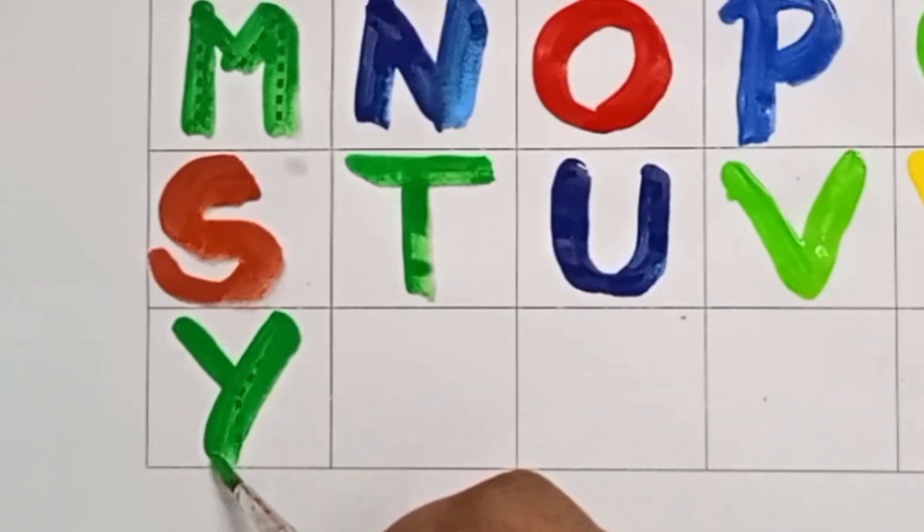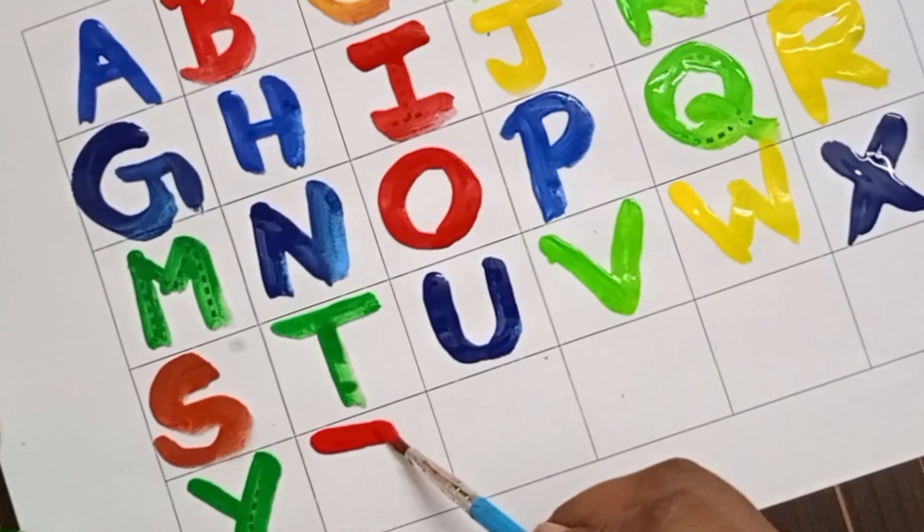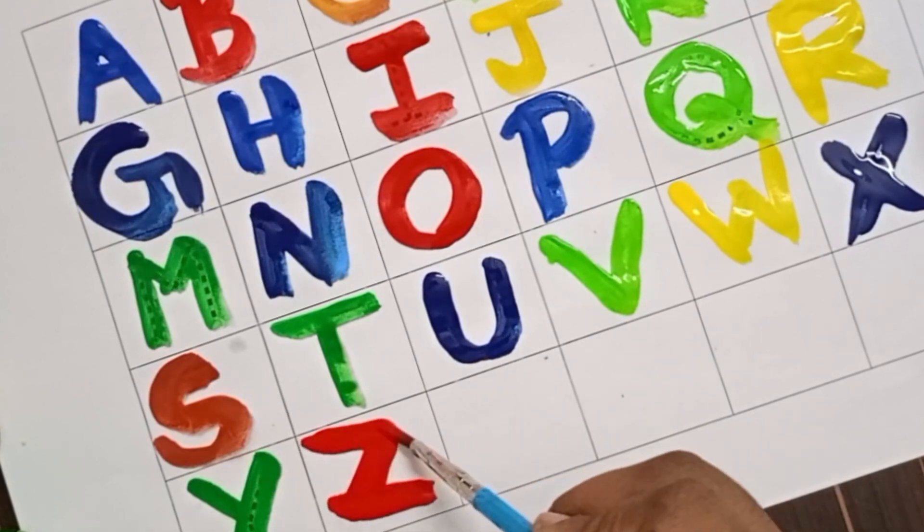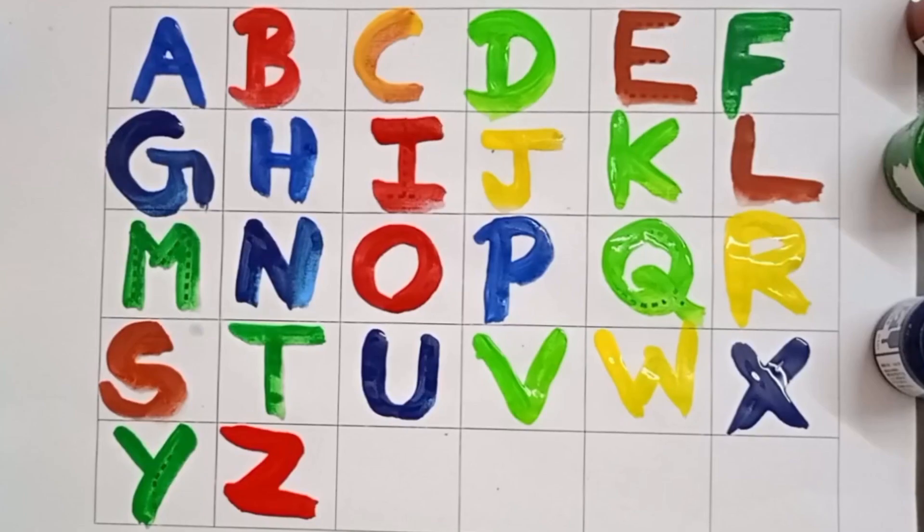Y. Y for yak. And Z. Z for zebra. Now let's repeat one more time.